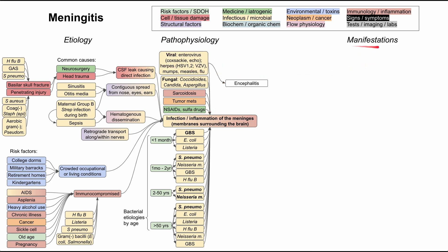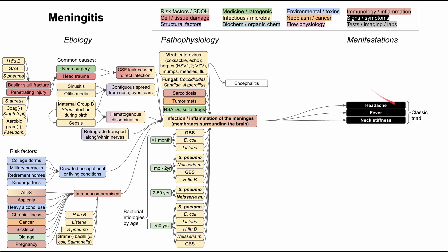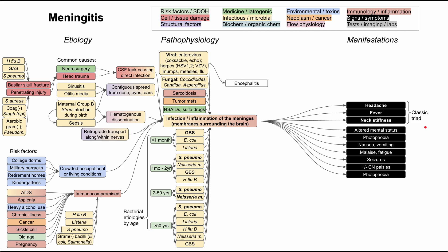Now let's get into the manifestations. The classic triad for adults and adolescents with meningitis is headache, fever, and neck stiffness. Other symptoms include altered mental status — since the meninges surround the brain — photophobia, nausea, vomiting, malaise, fatigue, seizures in more severe cases, and cranial nerve palsies in more severe cases.